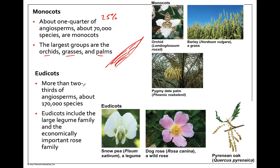Eudicots make up more than two thirds — about 75% — of angiosperms. This includes the really large family called the legumes, which are economically important and include peas, beans, and soy. The rose family is another important group, also including edible fruits like strawberries, apples, and pears. And then we have several flowering trees — oak, walnut, maple, willow, and birch trees are all flowering woody trees that fall into the eudicot family.